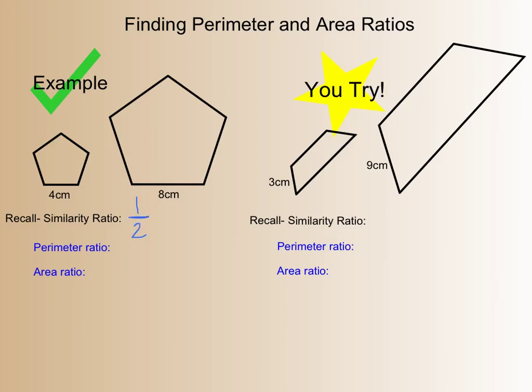Now our perimeter ratio, if you recall from that first slide, is the exact same thing. But our area ratio is our perimeter ratio squared.